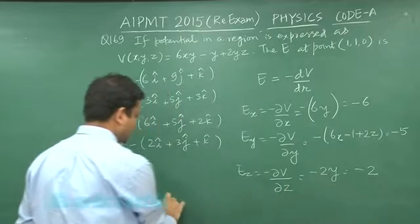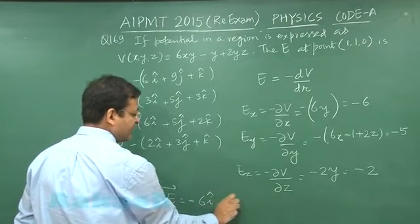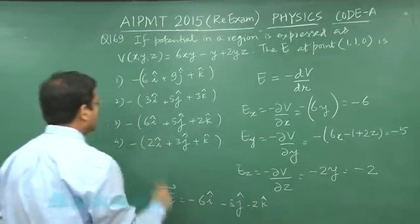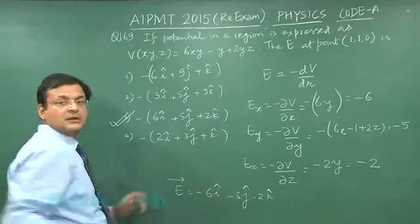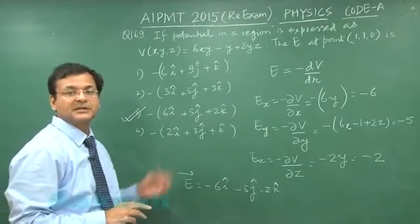So in total, finally you have electric field vector as minus 6i minus 5j cap minus 2k cap Newton per coulomb. So this expression is matching with the option 3 of this question. So this will be the correct option. Switch over to next question 170.